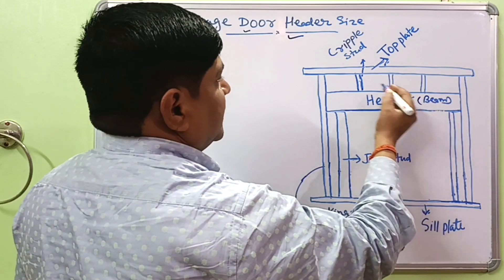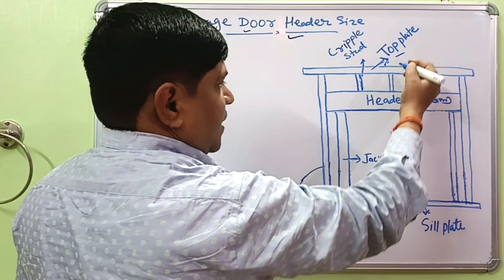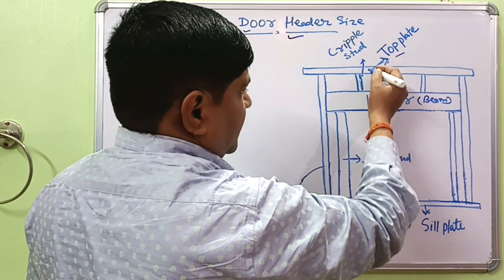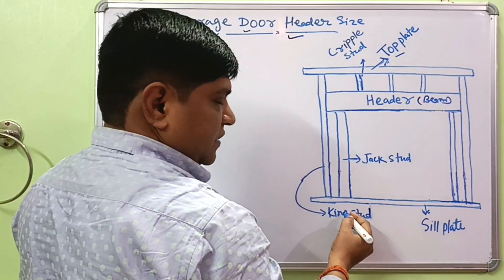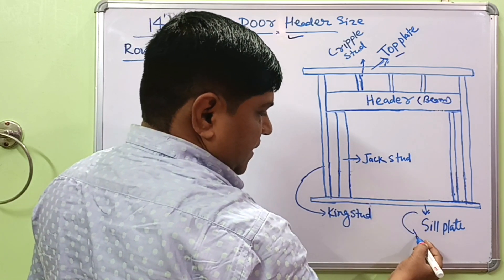This is the triple stud and top plate. What is the function of the header? The header collects all the loads acting on it, then transfers them to the jack stud. The jack stud transfers the load to the king stud, and the king stud transfers to the sill plate, and then it goes to the foundation.